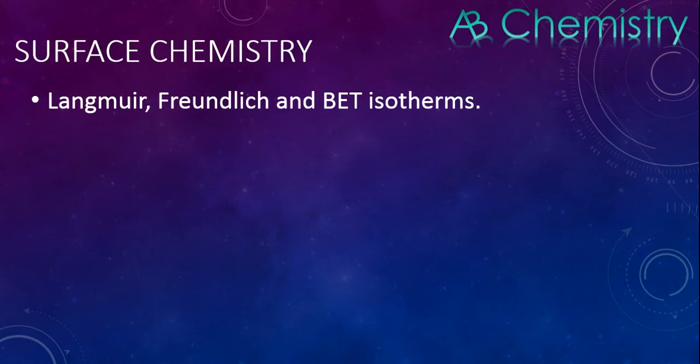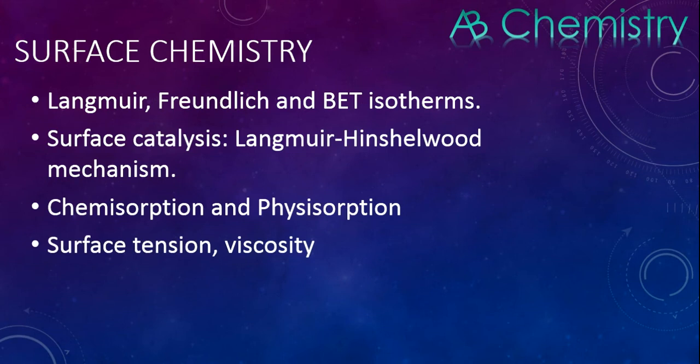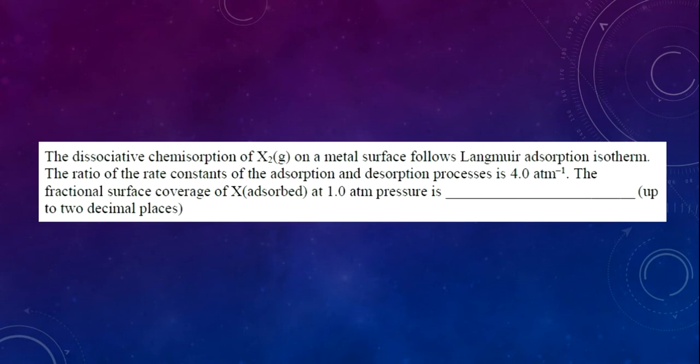In surface chemistry, Langmuir, Freundlich, and BET isotherms are the main focus. Langmuir is pretty simple. If time allows, I will make a video about Langmuir isotherms, or you can just Google it. For Freundlich and BET isotherms, you just have to know the equations, their corresponding graphs, and the parameters. In surface catalysis, they ask about the Langmuir-Hinshelwood mechanism. This was a question from the previous exam about Langmuir adsorption isotherm—it's very simple if you know the equation.